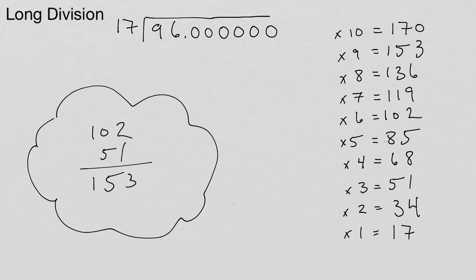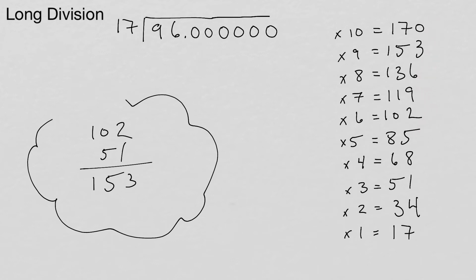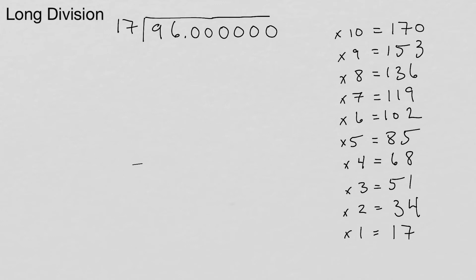This is a quick way to build the table using mental arithmetic — doubling when you need to, adding the easiest combinations. You want to make a chart like this from 1 to 10, giving you all the multiples of 17. Now that we have our multiples, we can go ahead and start the calculation.